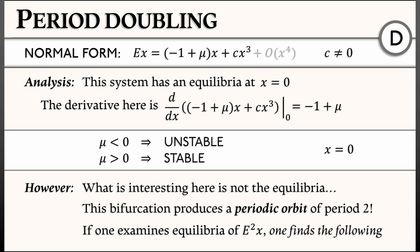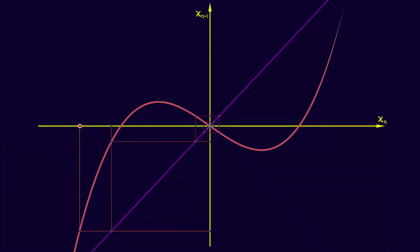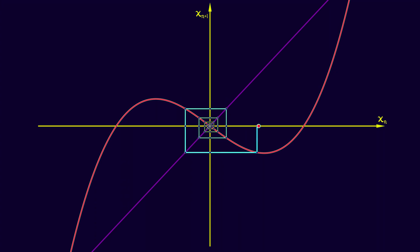If one examines the equilibria of the second shift of x, then one can find that periodic orbit and a little bit more that is happening. If we do like we did for the other discrete time bifurcations and jump to the diagram, then what do we see happening?